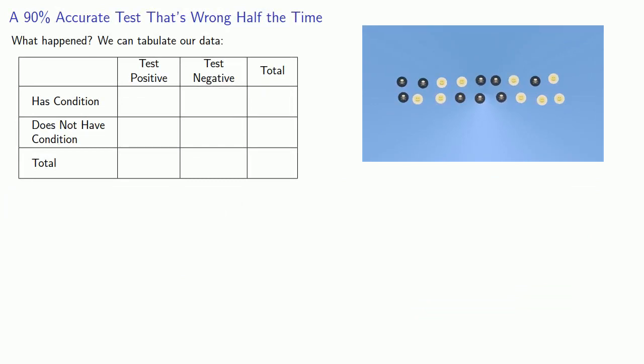So to start off with, we have a total of 100 people that we're testing and since 1 in 10 of them have the condition, then we know that 10 people have the condition and 90 people do not have the condition.